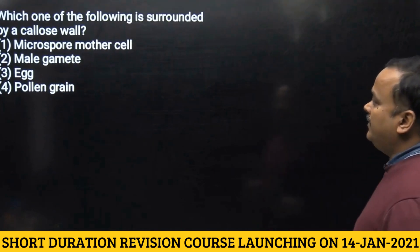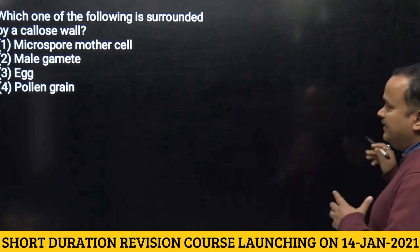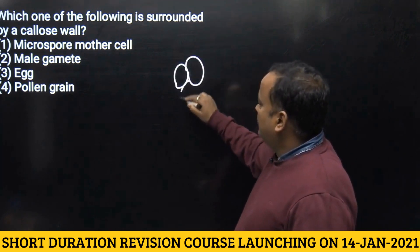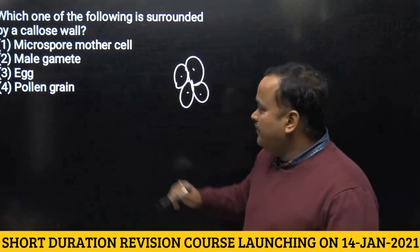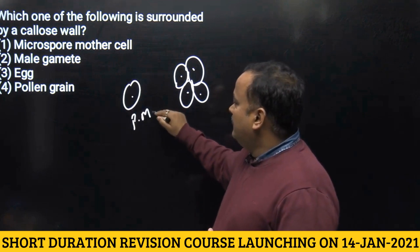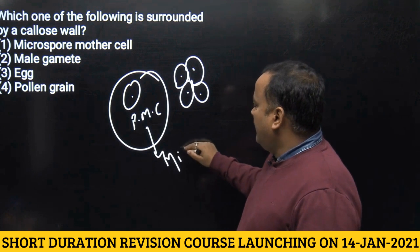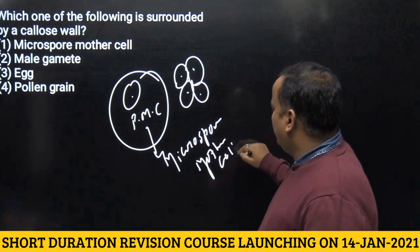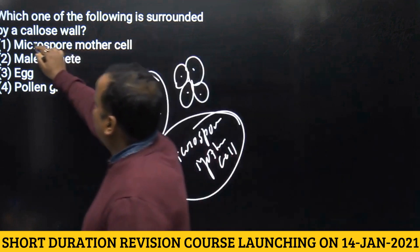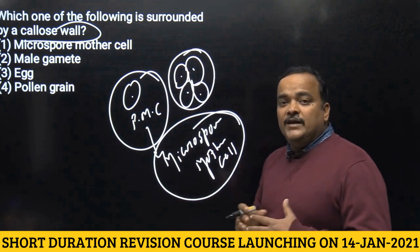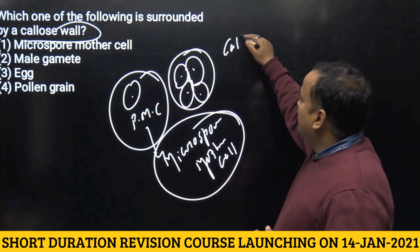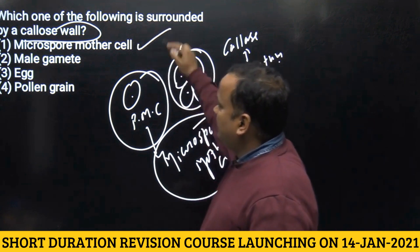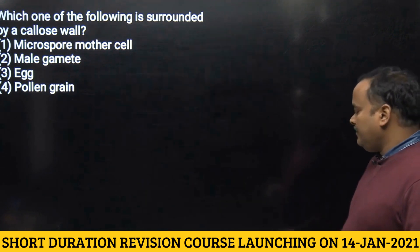The next question asks which one is surrounded by a callose wall. This question has been asked even though it is not explicitly in the NCERT text. The pollen tetrad or microspore tetrad is formed from the pollen mother cell, also called the microspore mother cell. This microspore mother cell is surrounded by a callose wall, and the microspores are joined with the help of callose. This callose wall is degraded by the enzyme callase, produced by the tapetum. So the answer is the first option: microspore mother cell.